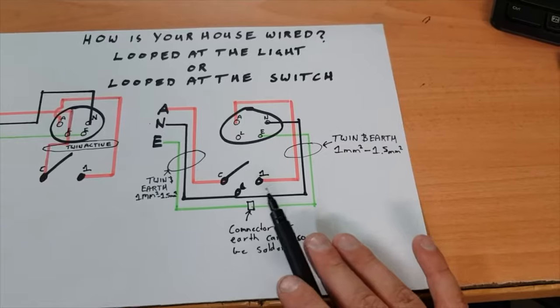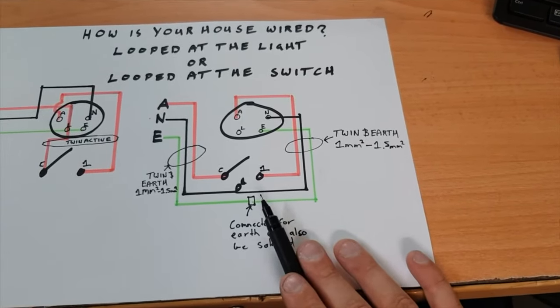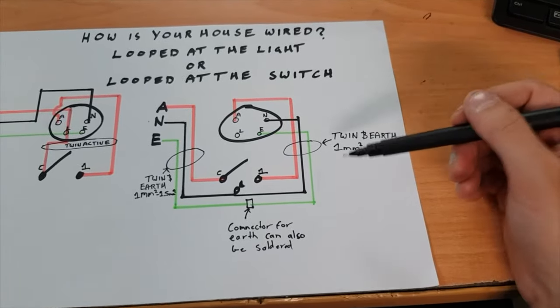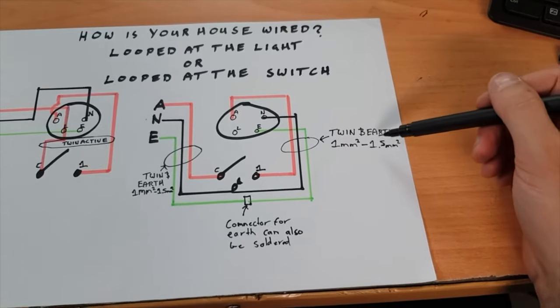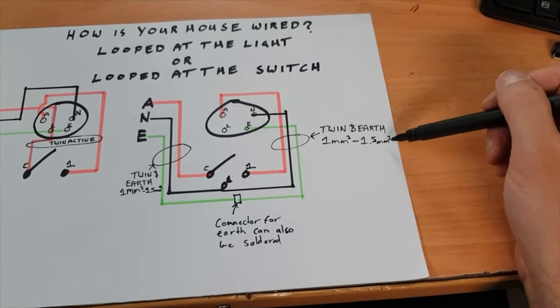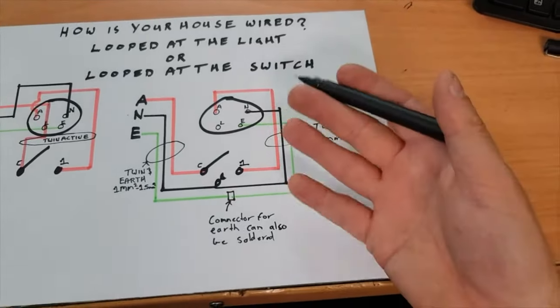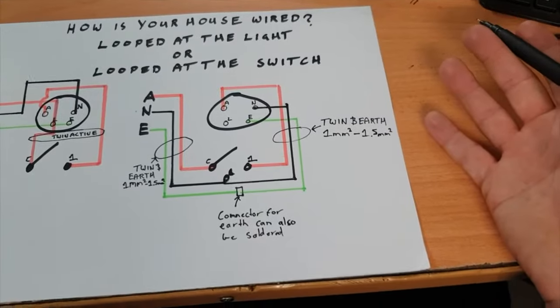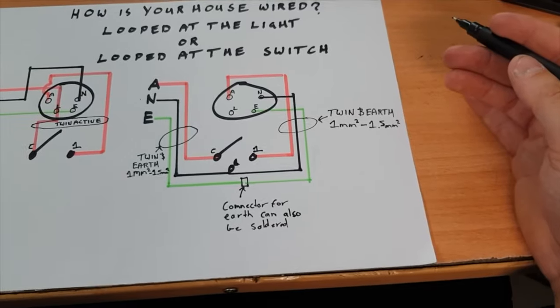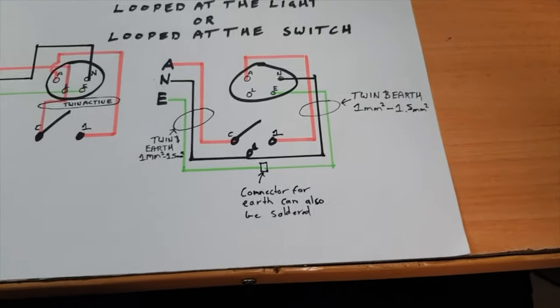Now from generally what happens is in say the new houses and pretty much any added additions, this cable here that goes from your switch to the light is normally a twin and earth cable. So in your house you'll either have a one mil or 1.5 mil cable. This type of cable even comes in 2.5 and 4 mil and 6 mil and so on, but it starts to become a bit of overkill for just a light. Your power points are wired in 2.5.